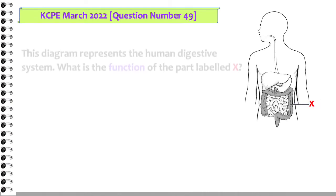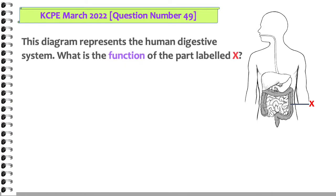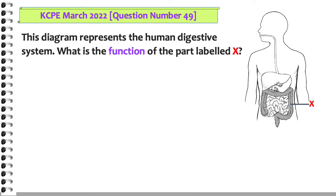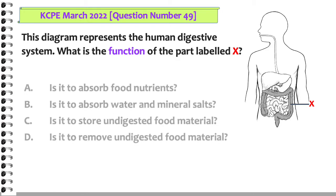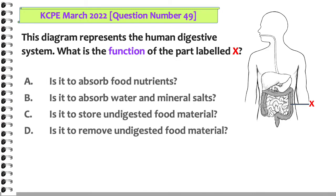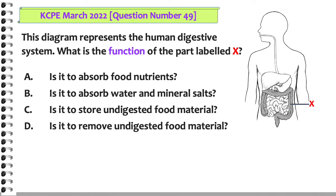This diagram represents the Human Digestive System. What is the function of the part labeled X? A. Is it to absorb food nutrients? B. Is it to absorb water and mineral salts? C. Is it to store undigested food material? Or D. Is it to remove undigested food material?